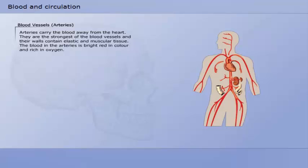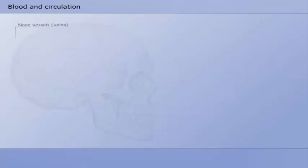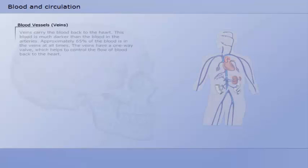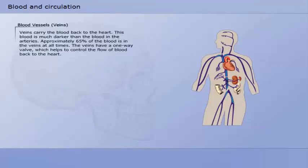Arteries carry the blood away from the heart. They are the strongest of the blood vessels and their walls contain elastic and muscular tissue. The blood in the arteries is bright red in color and rich in oxygen.